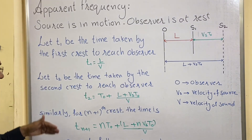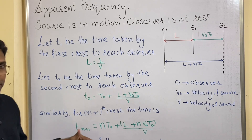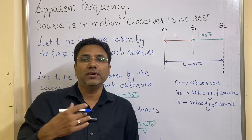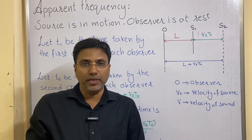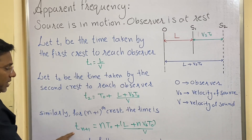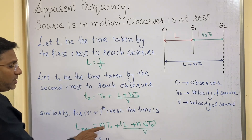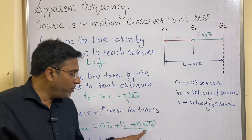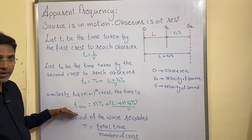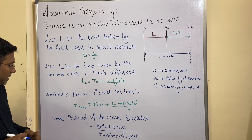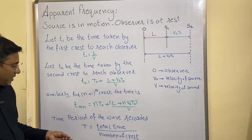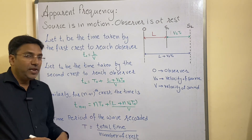Next, for the n+1 crest — as you have seen there is a first crest, second crest, similarly third crest, fourth crest, and many number of crests — the formula for the (n+1)th crest is: Tn+1 = nT0 + (L + nVsT0)/V. This formula you have to remember. And one more formula: the time period of the wave recorded by the observer is given by total time divided by number of crests.